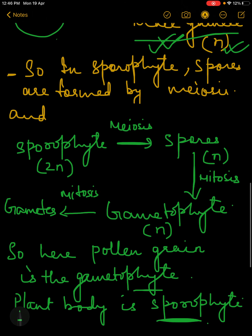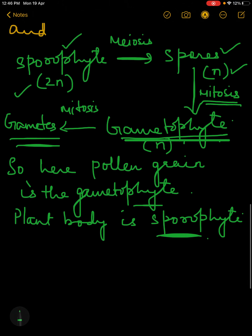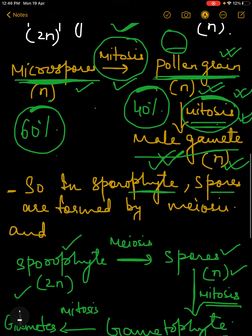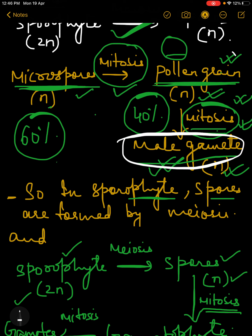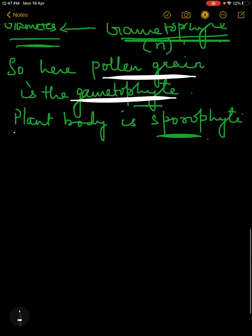In the sporophyte, spores are formed: the sporophyte which is diploid (2N) gives rise to spores which are haploid (N). Now these spores will undergo mitosis to give rise to the gametophyte, and the gametophyte will give rise to gametes. So here in the case of angiosperms, who is the gametophyte? The pollen grain is the gametophyte, because it is the pollen grain that is giving rise to the gametes. The main plant body is the sporophyte.